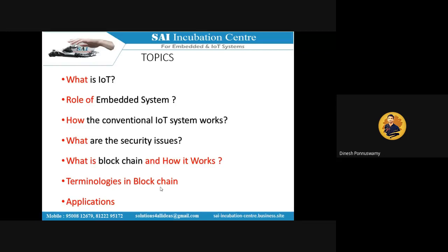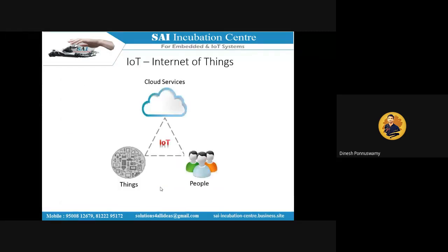We need to know all the terminologies available, because they are used in IEEE papers too, so we shouldn't get confused while reading them. Starting with IoT — it's very simple. You'll have different nodes, also called 'things.' Things can be a microcontroller, processor, or any device that has communication capability, either wired or wireless. It can be your mobile phone or your microcontroller.